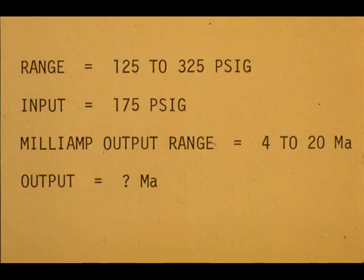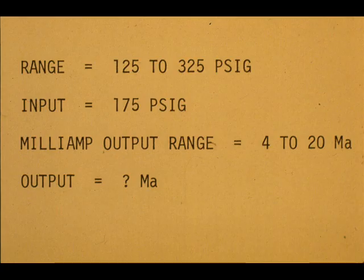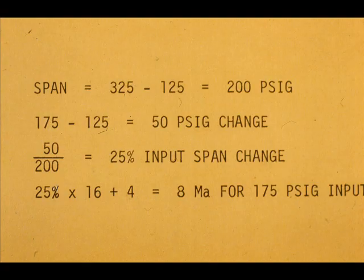Take the 125 to 325 PSIG range, for example. Assume an input of 175 PSIG to a 4 to 20 milliamp transmitter. What is the correct output? The span is 200 PSIG. An input of 175 PSIG is 25% of the input span. 25% of the 16 milliamp output span is 4 milliamps. Add this to the 4 milliamp starting current, and we have 8 milliamps as the answer.